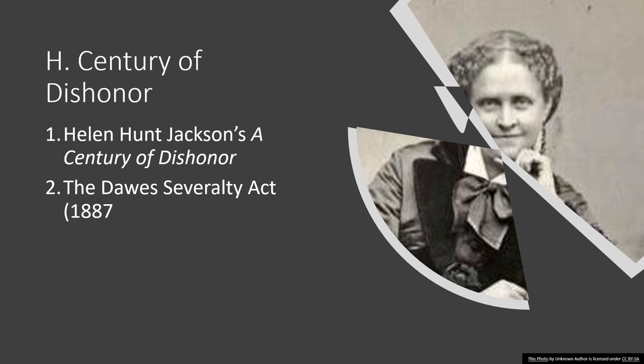Although many Americans viewed the Indian Wars as a necessary part of American settlement across the West, a growing number of politicians, religious leaders, and other Americans recognized the horrible treatment of Native Americans. Helen Hunt Jackson's 'A Century of Dishonor' (1881) called attention to the exploitation of Native Americans and led many to seek policy change. The Dawes Severalty Act of 1887 undermined tribal power by allotting homesteads to white individuals, forcing a large number of Native American nations to relocate once again.